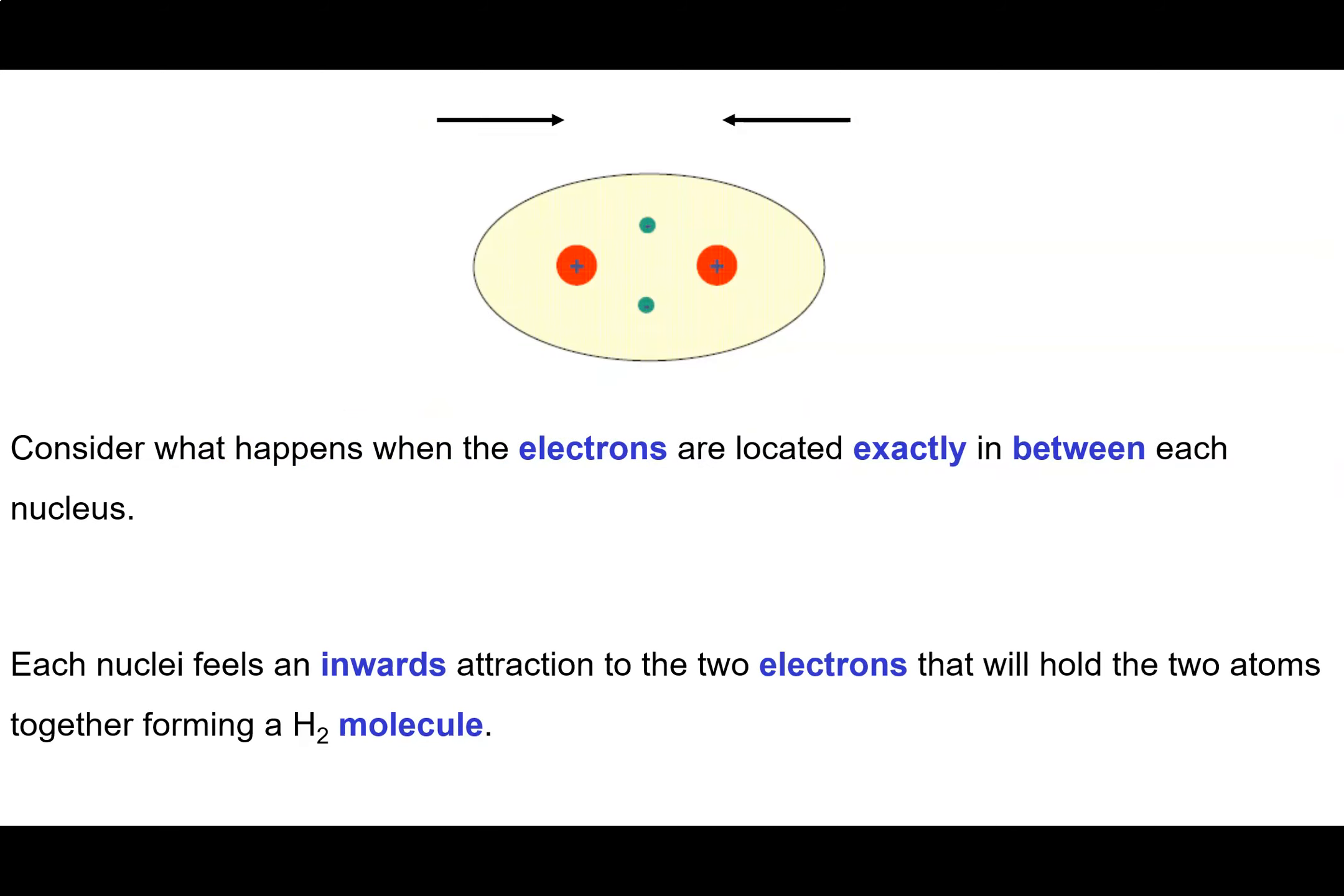So if we continue to bring these atoms closer together so that their 1s orbitals overlap, and then we put the two electrons exactly halfway between each nucleus, we end up with an arrangement of particles where each nuclei feels an inwards attraction to the two electrons.